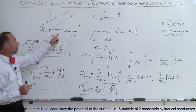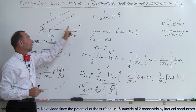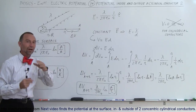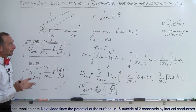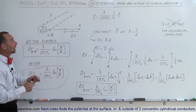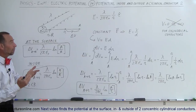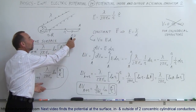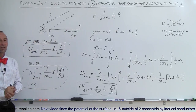That's how we find the potential outside, on the surface, and inside the cylindrical conductor. Remember, it's always referenced to some reference point, so whatever the voltage is at A, we can find the difference in voltage at another point outside or inside the cylinder. Whenever it comes to potential, there's always a reference point — maybe we let A equal zero, maybe A equals 100 volts. It doesn't matter; we're just looking for the difference in potential from the reference to another point near the cylinder.